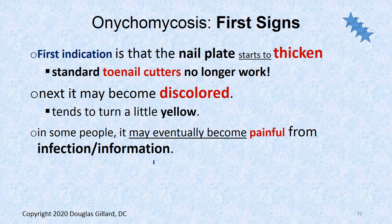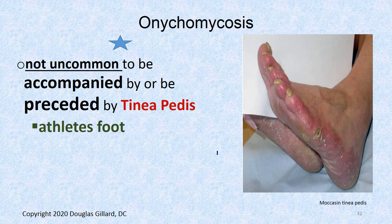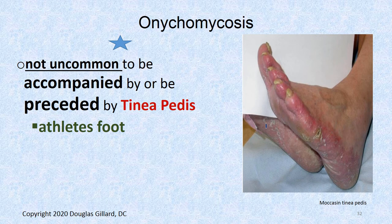What are the first signs that you have tinea unguium or onychomycosis? Your nail plate starts to get thick. I had this in one of my nails — I couldn't get my regular clippers on it, and that's from the hyperkeratosis. Later it can get yellow in color. Some people, especially immunocompromised, can have it get down into the dermis of the nail bed and it can become painful. Athlete's foot or tinea pedis is a very common starting point for this. This patient has athlete's foot — tinea pedis — and you can see the nails are just loaded with fungi as well, so they have tinea unguium, aka onychomycosis, and tinea pedis at the same time.